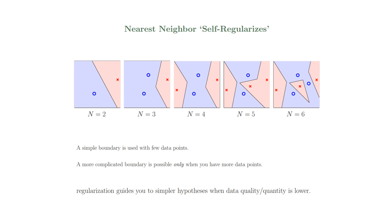Let's look at an example to see why the nearest neighbor algorithm is doing so well, because we just figured that it's like overfitting the data everywhere. So what is it that's keeping it so efficient? Let's look at this example where we're using n equals two points. We can simply classify it into two classes, because there is just that line that bisects. So we have this simple linear classifier.